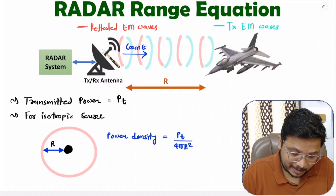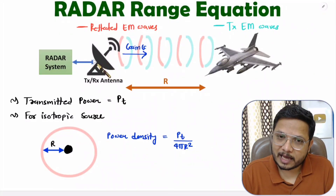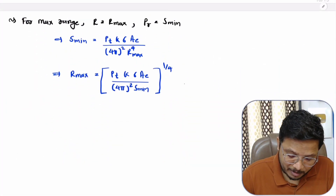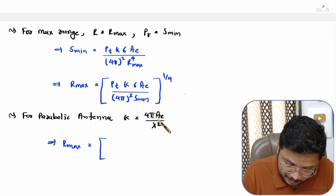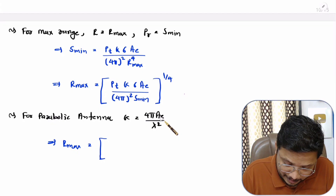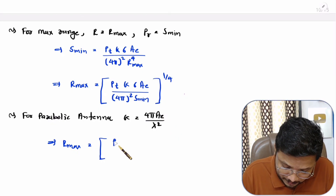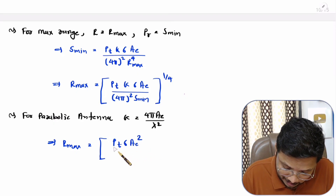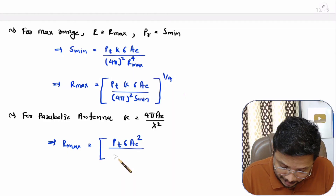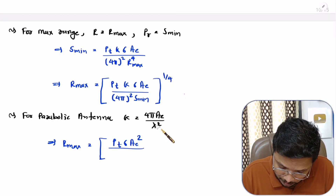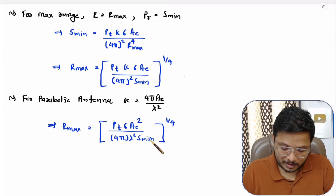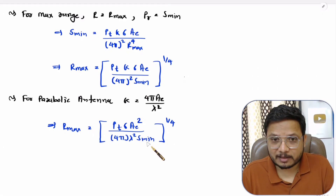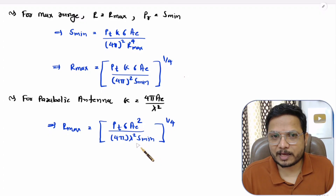In practice, we typically use a parabolic dish antenna. The gain of a parabolic dish antenna is G = 4π·Ae / λ². Substituting this into the radar range equation, the 4π terms partially cancel and Ae becomes squared in the numerator. The modified radar range equation becomes Rmax = [Pt·σ·Ae² / (4π·λ²·Smin)] raised to the power 1/4.